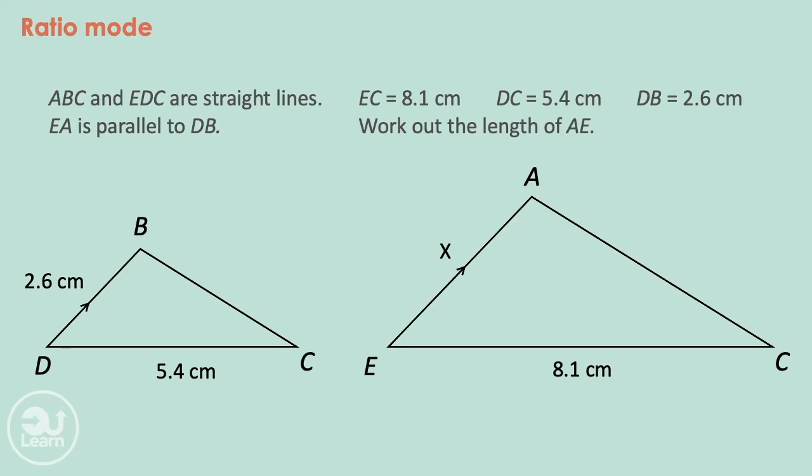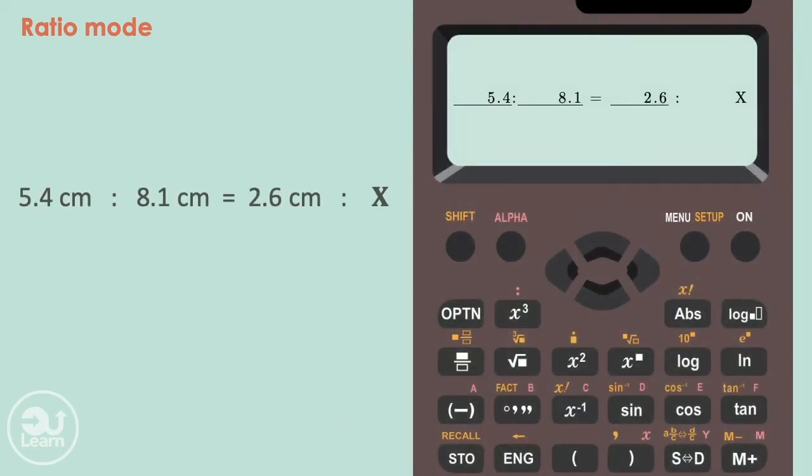We can now place our corresponding lengths into ratios. DC corresponds to EC. So the first ratio is 5.4 to 8.1. Length DB corresponds to our missing side AE, giving us the equivalent ratio of 2.6 to our unknown length. We put our values into the calculator, giving us the answer of 3.9cm.